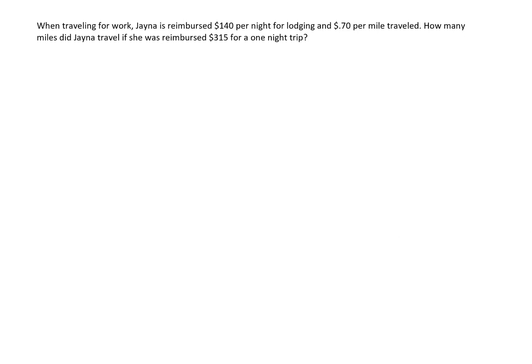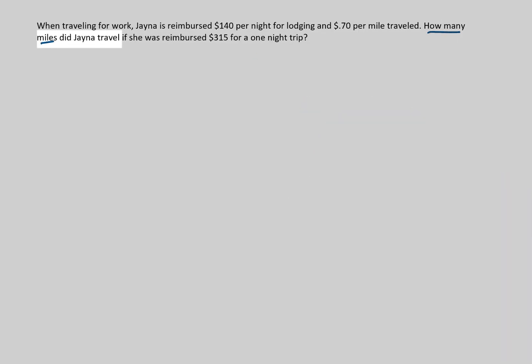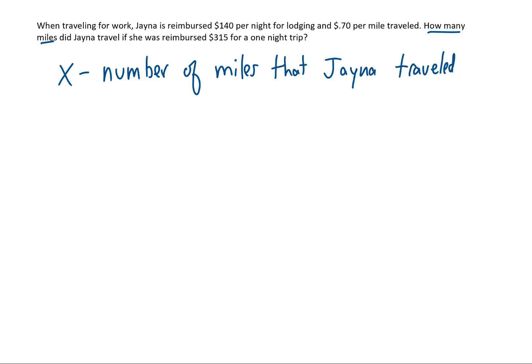When traveling for work, Jaina is reimbursed $140 per night for lodging and 70 cents per mile traveled. How many miles did Jaina travel if she was reimbursed $315 for a one-night trip? Now, you're going to see a lot of advice for how to solve word problems. Read the problem carefully. Read it more than once. Draw a sketch. I think the most important piece of advice is to figure out what it is we're actually trying to solve for and then naming that some variable. So, in this example, it's asking how many miles did Jaina travel? So, we need to call that something. I'm going to call it x and x is going to be the number of miles that Jaina traveled. If we don't do this step, then it's just going to be really hard to make an equation out of this problem.